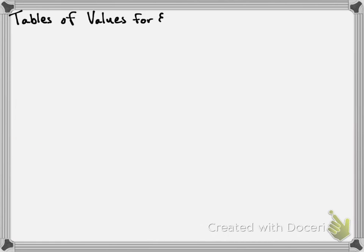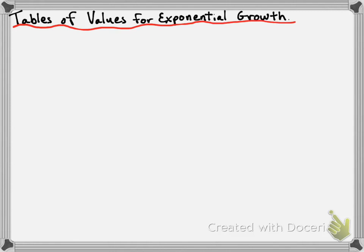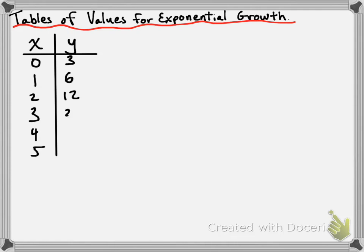The next thing I want to go through is what a table of values for an exponential growth function looks like and what the properties are. I'm going to use the table of values that we made in class today. We have our x and y columns. My x varies from 0 to 5, and my y values are 3, 6, 12, 24, 48, and 96.